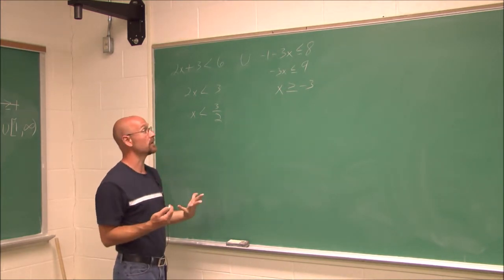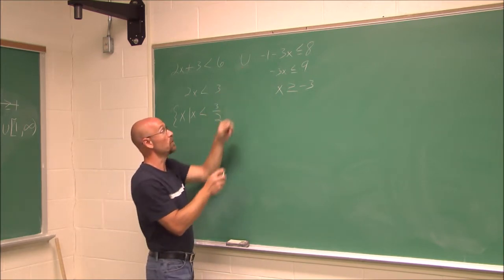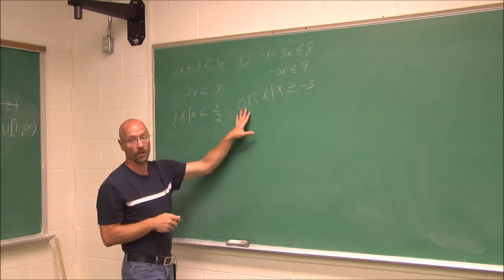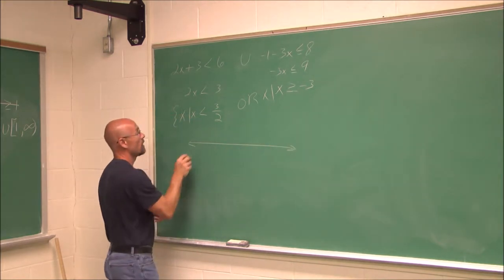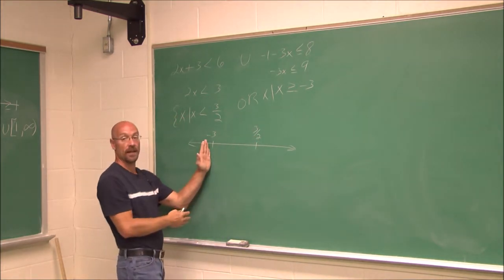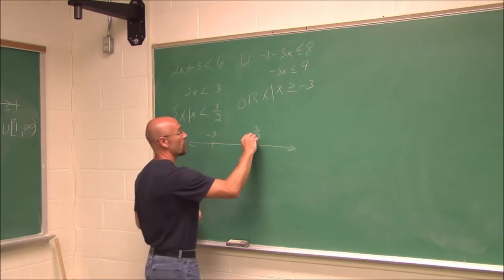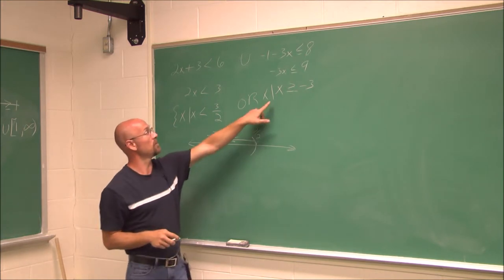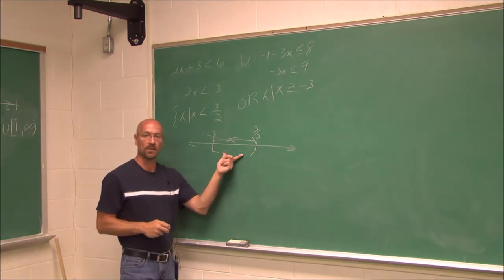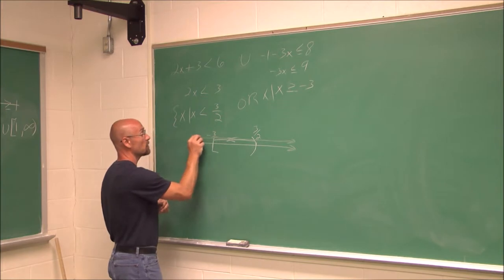So we have these two results. In set notation: x such that x is less than 3/2, or x such that x is greater than or equal to negative 3. If we graph this, negative 3 is to the left and 3/2 is to the right. x is less than 3/2 goes left to infinity, and x is greater than or equal to negative 3 goes right to infinity. It kind of looks like an intersection, but this essentially says one goes to positive infinity and the other goes to negative infinity.